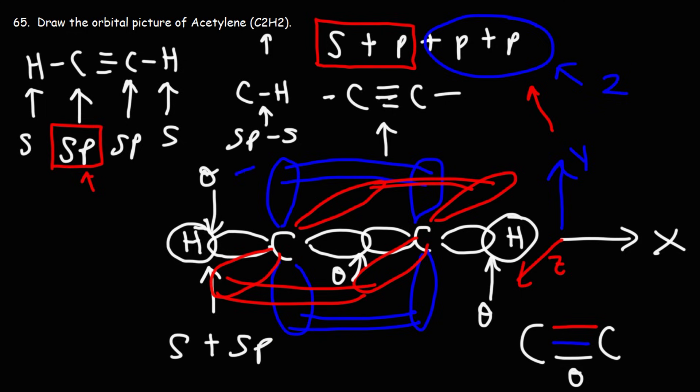And for the pi-bond, it's just empty p-orbitals next to each other. They exist above and below the sigma bond.